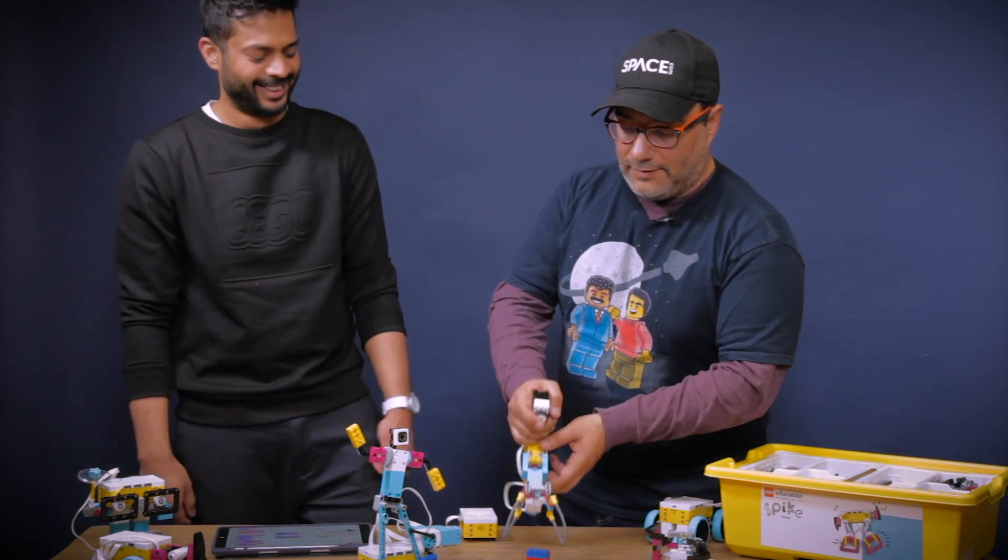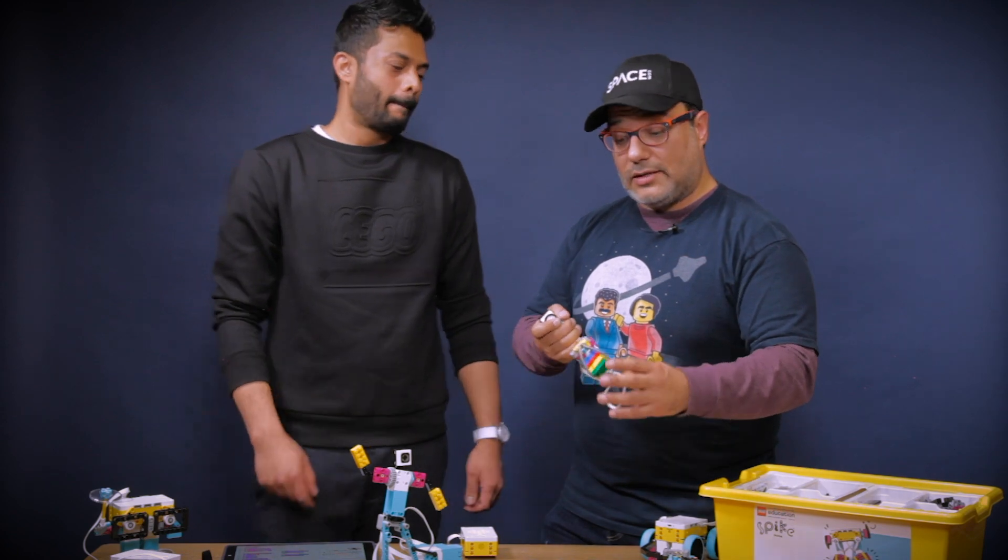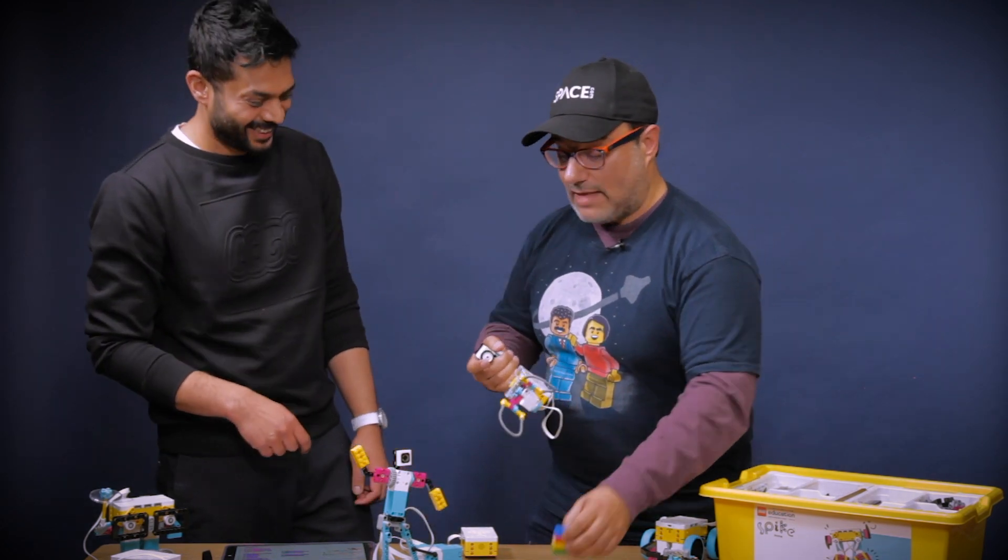And we have a grabbing device. You can try. All right, let's see if I can do it. Very good. I got it. So good for trash. Good for moon rocks. If you're on the moon, right? Astronauts could use this.